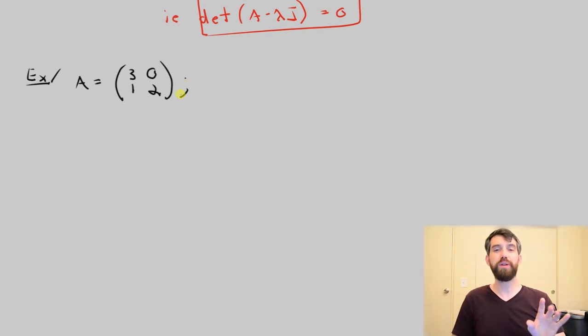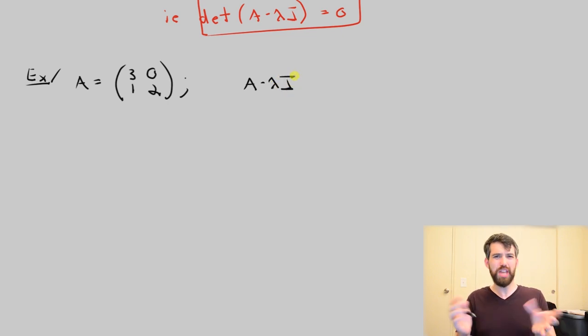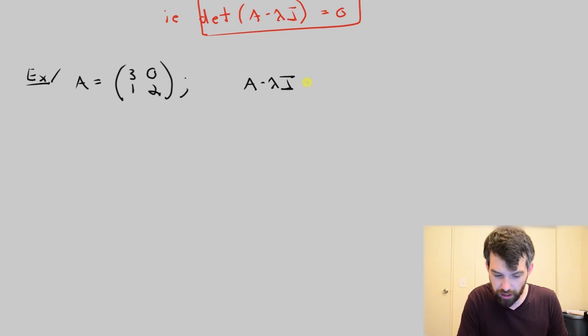But I'm taking the determinant of A minus lambda I. So if I want to look at what A minus lambda I is, I is the identity matrix. It's zero almost everywhere except for that main diagonal, and then along that main diagonal it's just going to be all ones. If I multiply it by lambda it's going to be all lambdas. So in other words, this is going to look like the A matrix 3, 0, 1, 2.